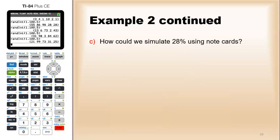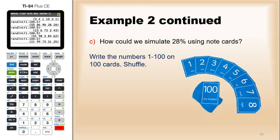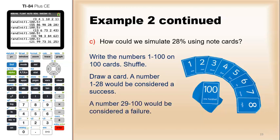If I was to use note cards, the slow way, I would first write the numbers one through 100 on 100 cards. Have fun with that. Shuffle them thoroughly and then draw a card. Any number between one and 28 would be considered a success. Then put the card back, shuffle again, draw another card, put the card back, shuffle again, draw another card. Each time would be a 28% probability. Anything above 28 would be a failure.